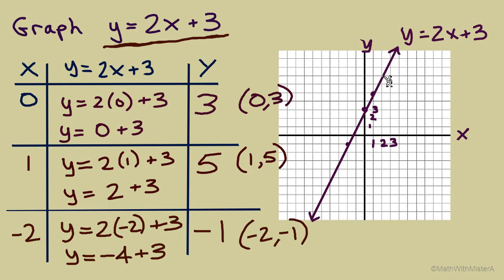Just a quick reminder that the other ordered pairs that we see on this line, that maybe we didn't find in the table, would still be more ordered pair solutions. Like this point here is at (3, 9). If we went to our table and chose a value of x equals 3, I'm going to squeeze it in down here.